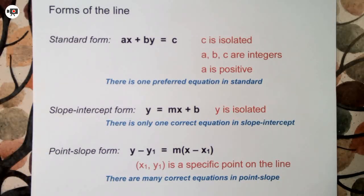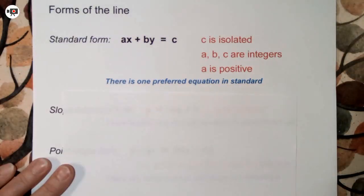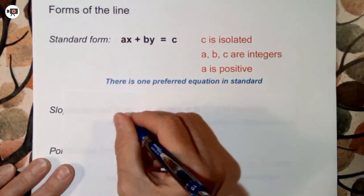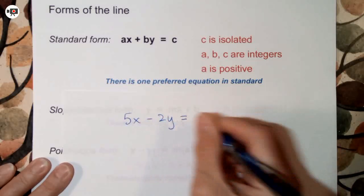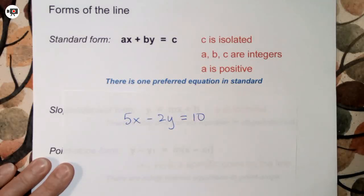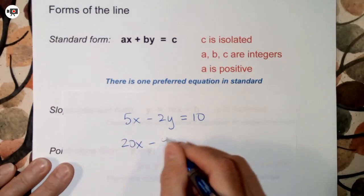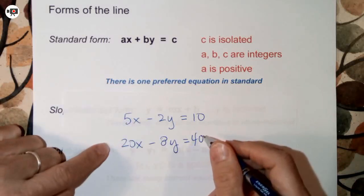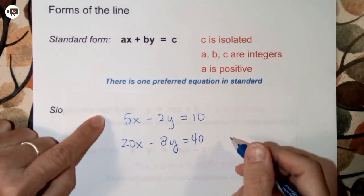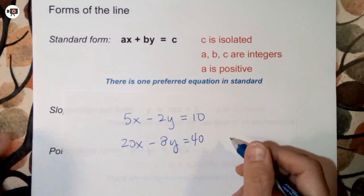There's one preferred equation in standard. You'll recall that you can have many equivalent equations. For example, if you'd have 5X minus 2Y equals 10, an equivalent equation might be 20X minus 8Y equals 40. That's just the first one multiplied by 4. Both of these are in standard form, but this one is preferred because the common factor 4 has been removed.